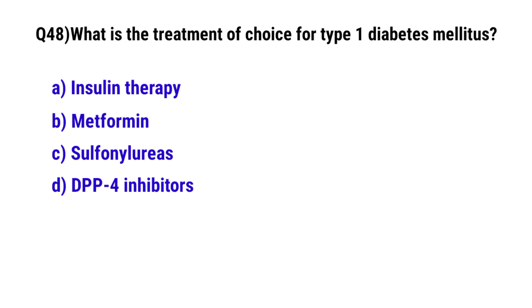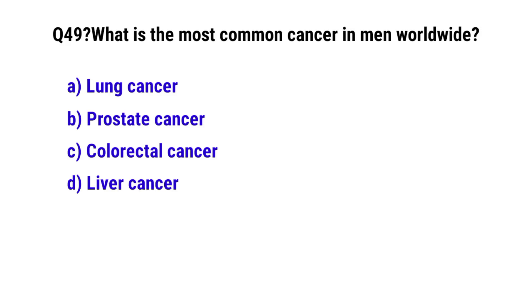Question number 48: What is the treatment of choice for type 1 diabetes mellitus? The correct option is A: Insulin therapy. Question number 49: What is the most common cancer in men worldwide? The correct option is B: Prostate cancer.